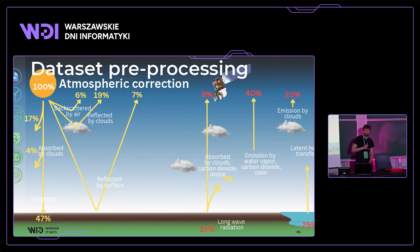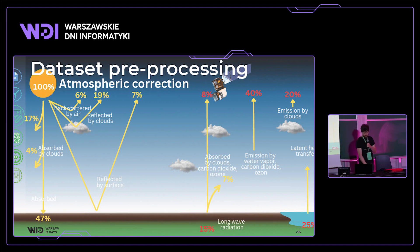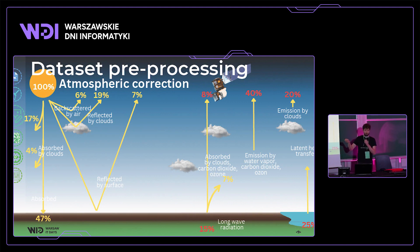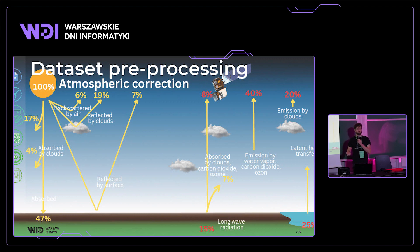After cleaning, we move to the preprocessing step. We are interested in surface reflectance — the light that reflects from the ground and reaches the satellite. Earth has a pretty dense atmosphere, and only about 7% of the reflected light actually reaches the satellite. The rest is scattered by air and clouds, or absorbed by water vapor. Therefore, we need to correct for all that scattering and absorption.